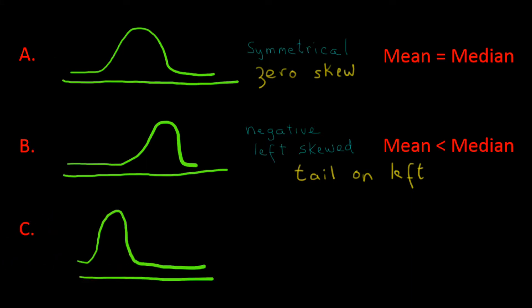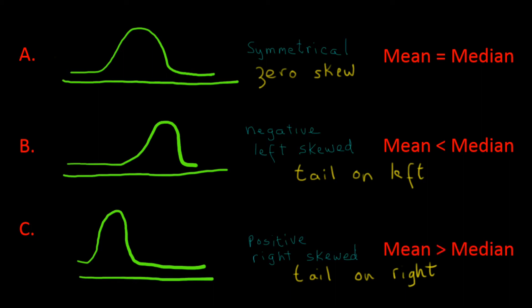Now let's look at a distribution where the tail is out to the right. This is called a positive or right skewed distribution. The tail is out to the right because there are a few extremely high values, but most of the data is down on the left. Imagine a neighborhood with most home prices between $150,000 and $200,000, but one home is a $30 million mansion. That mansion will pull the tail out to the right, causing a positive skew. It will pull the mean up so that the mean will be greater than the median.